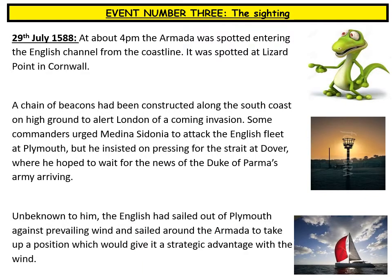Event three is the sighting. On the 29th of July 1588 at about 4pm, the Armada was spotted entering the English Channel from Lizard Point in Cornwall. A chain of beacons along the south coast alerted London to the coming invasion. Some commanders urged Medina Sidonia to attack the English fleet at Plymouth, but he insisted on pressing for the strait at Dover to wait for news of the Duke of Parma's land army. Unbeknown to him, the English had sailed out of Plymouth against prevailing winds and sailed around the Armada to take up a position giving them a strategic advantage with the wind.